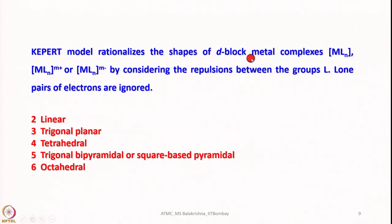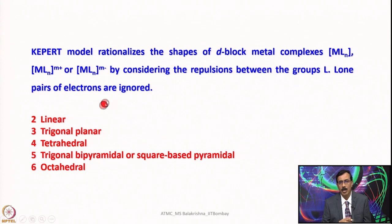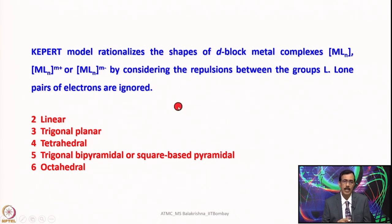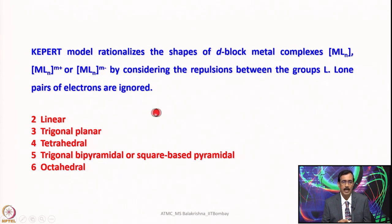The Kepert model rationalizes the shapes of d-block metal complexes by considering repulsion between the ligand groups L; lone pairs of electrons are totally ignored. With 2 ligands: linear geometry; 3 ligands: trigonal planar; 4 ligands: tetrahedral; 5 ligands: square pyramidal or trigonal bipyramidal; 6 ligands: octahedral. The number of ligands surrounding the metal ion was treated as the steric number, ignoring non-bonding d-orbital electrons. This certainly does not explain behavior when different types of ligands are present. It was concluded that the Kepert model and VSEPR theory are not suitable for explaining bonding in coordination compounds.